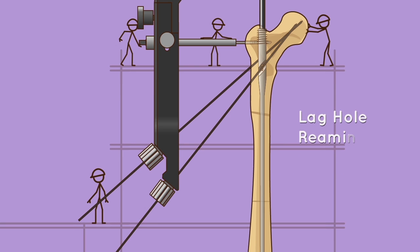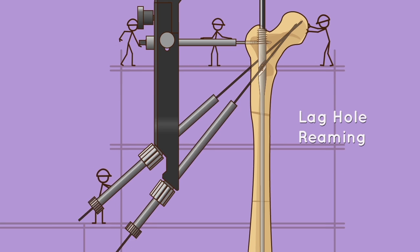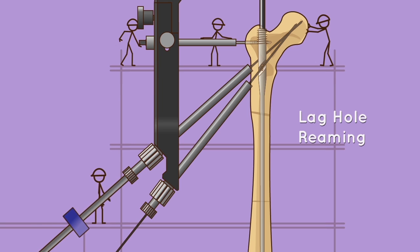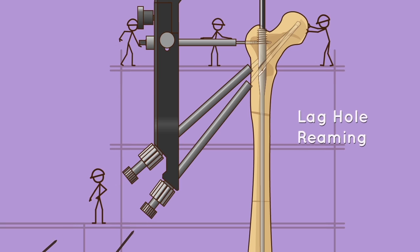Lag hole reaming: mount the lag screw sleeve. Using the position lock, set the lag reamer depth to the desired length. Ream until the stopper reaches the lag screw sleeve. Depth gauge wires are removed after reaming.